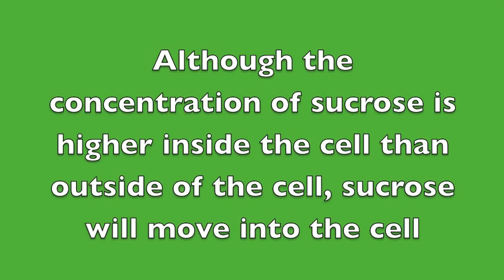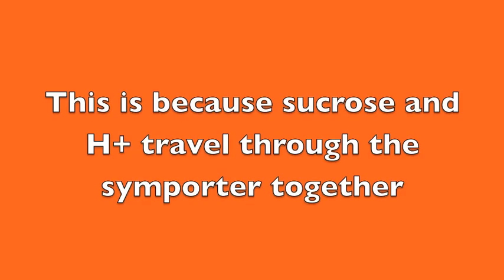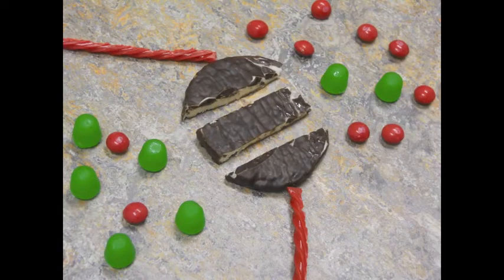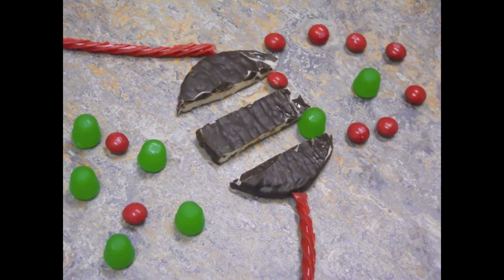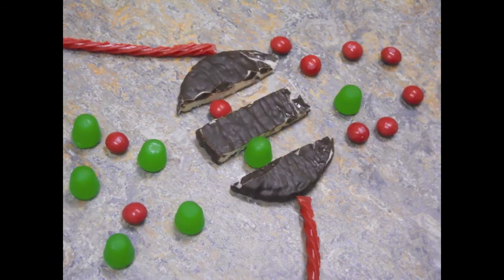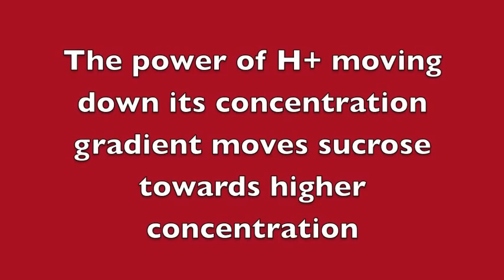Let's take it slow. Although the concentration of sucrose is higher inside of the cell than outside of the cell, sucrose will move into the cell. This is because sucrose and protons travel through this importer together. The power of the proton moving down its concentration gradient moves sucrose towards higher concentration.